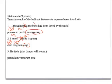'He feels that danger will come.' Don't translate 'that.' Danger is in the accusative, since it's the subject. 'Will come' — this is the future active infinitive. Notice the ending agrees with the subject.